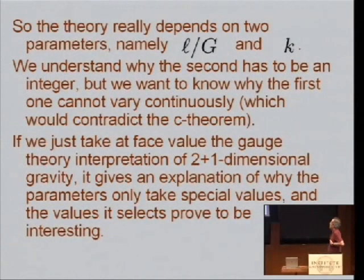So K is a Chern-Simons coupling, but in the gauge theory approach to gravity, L over G is a Chern-Simons coupling also. So we already understand that K is quantized, and we're just going to quantize L over G by interpreting it as another Chern-Simons coupling, just like K.